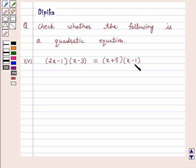Let's start the solution. Our given equation is 2x minus 1 into x minus 3 is equal to x plus 5 into x minus 1.